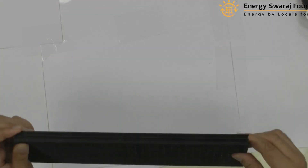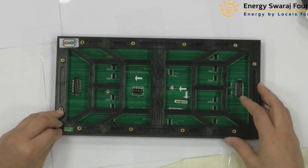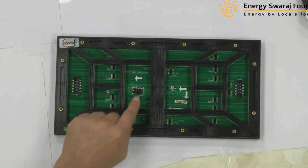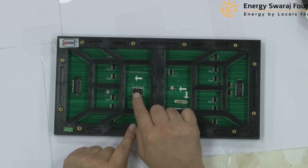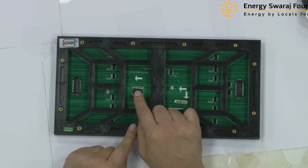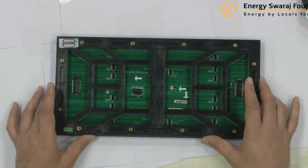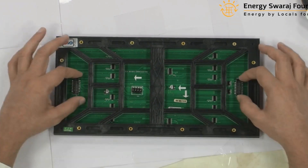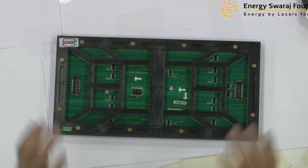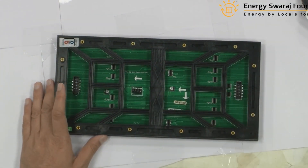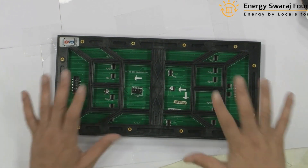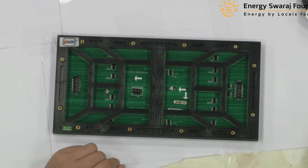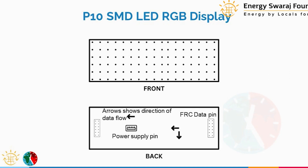There is also an up arrow indicating the correct orientation — when mounting, this side must face upward. Additionally, there is a four-pin connector which is the power supply cable for the LED panel. So this display requires two important inputs: power and data.